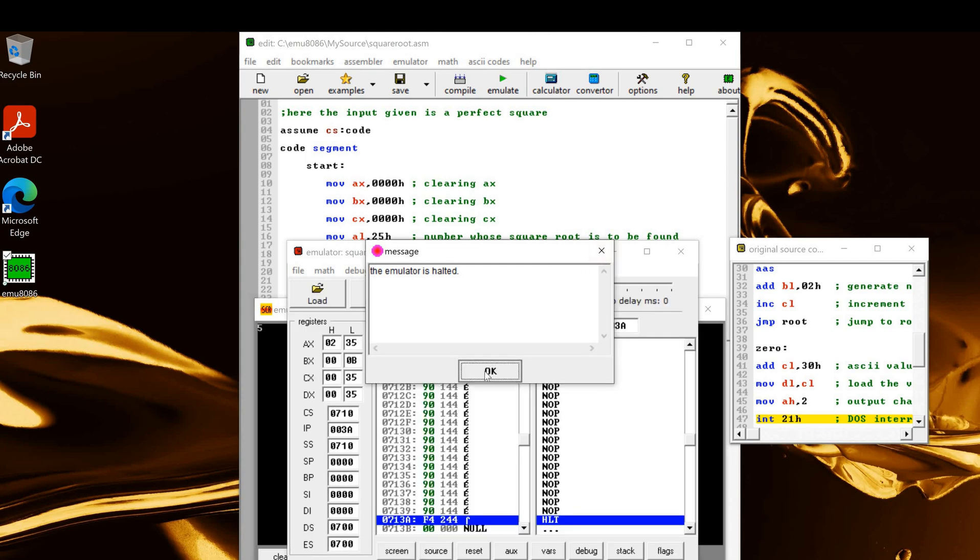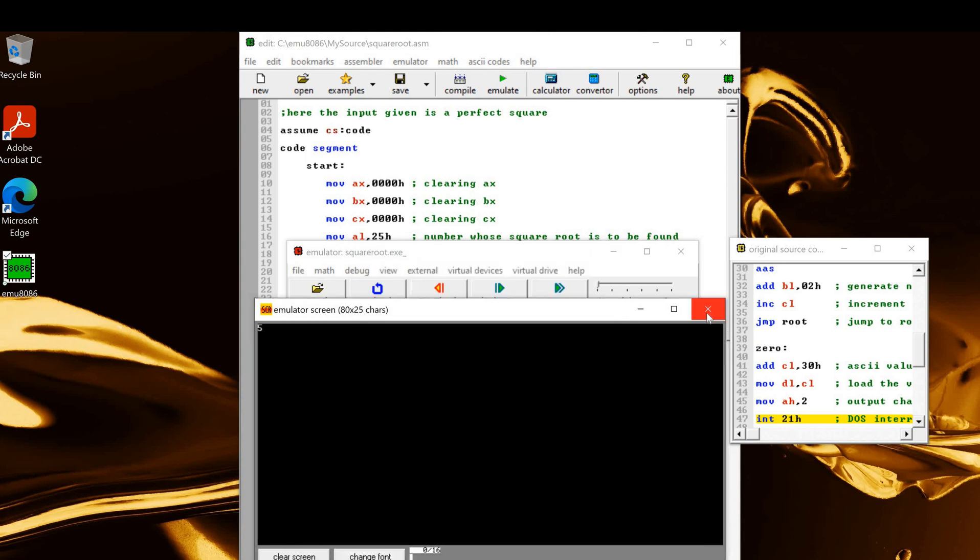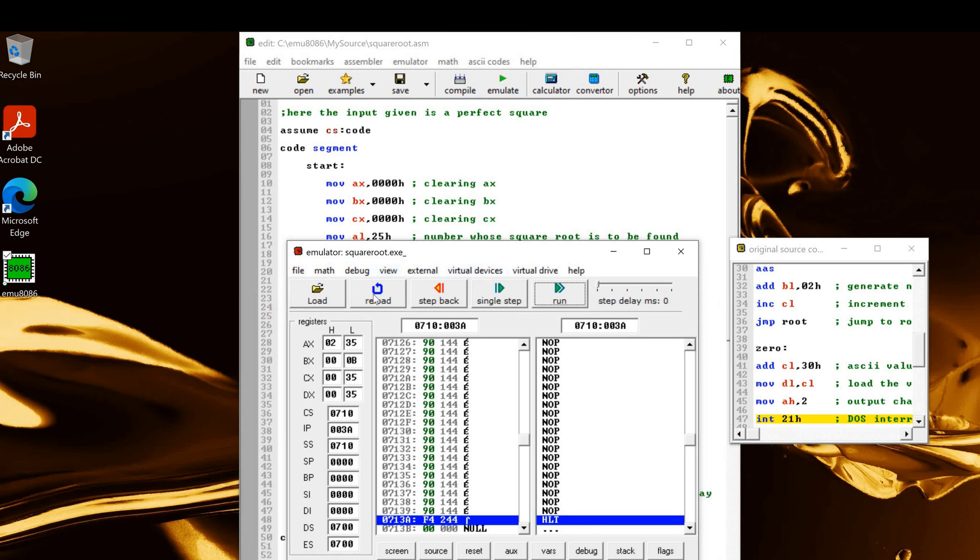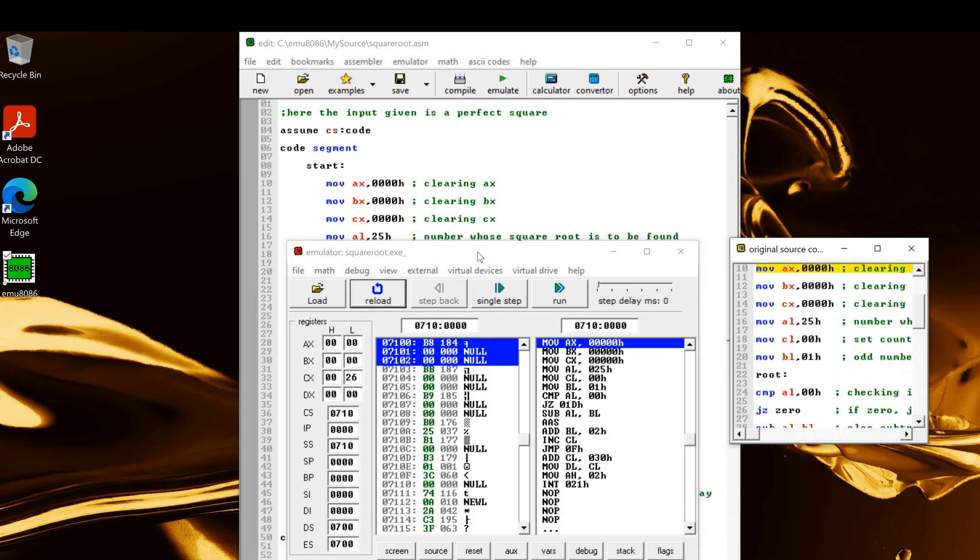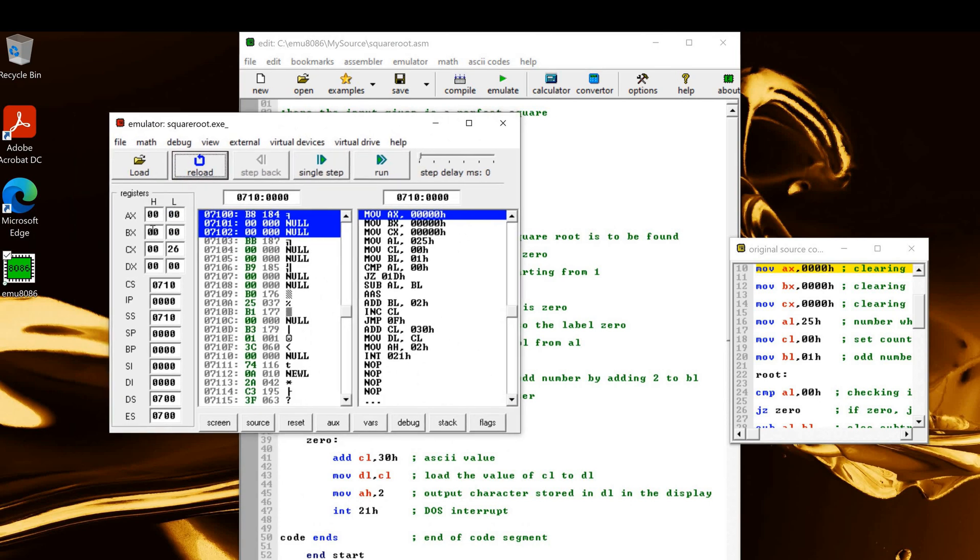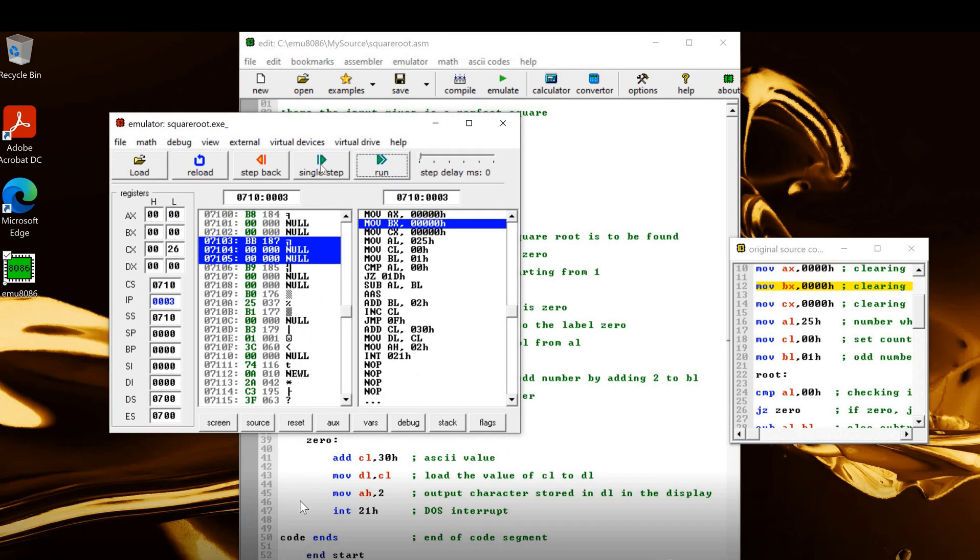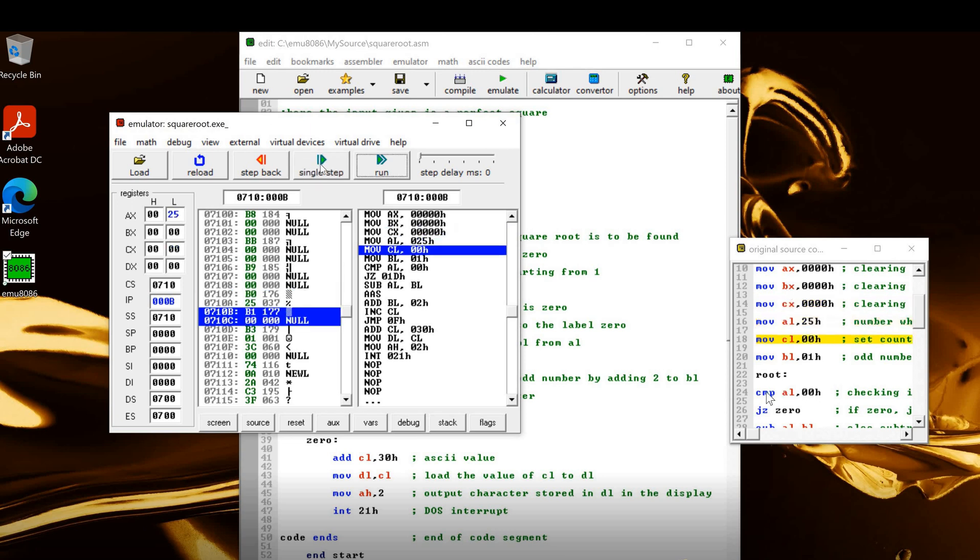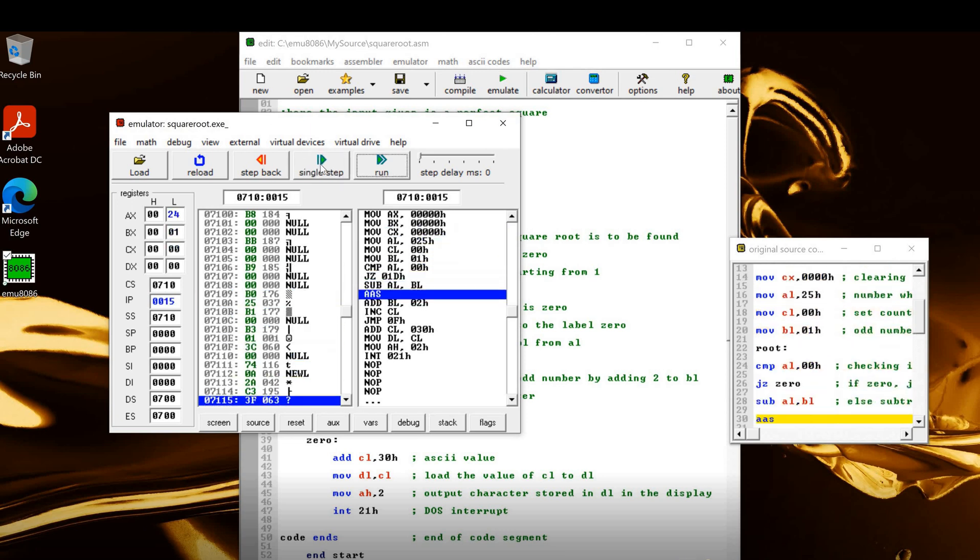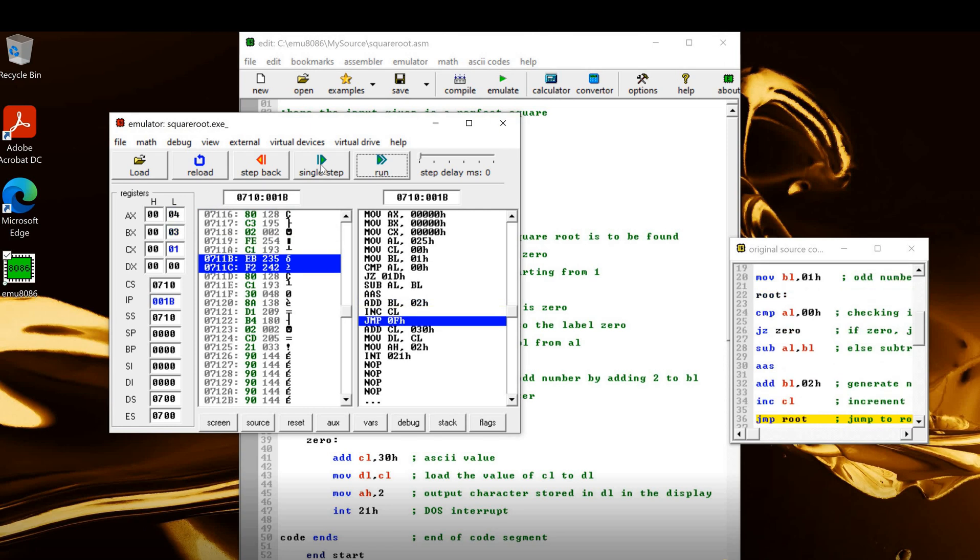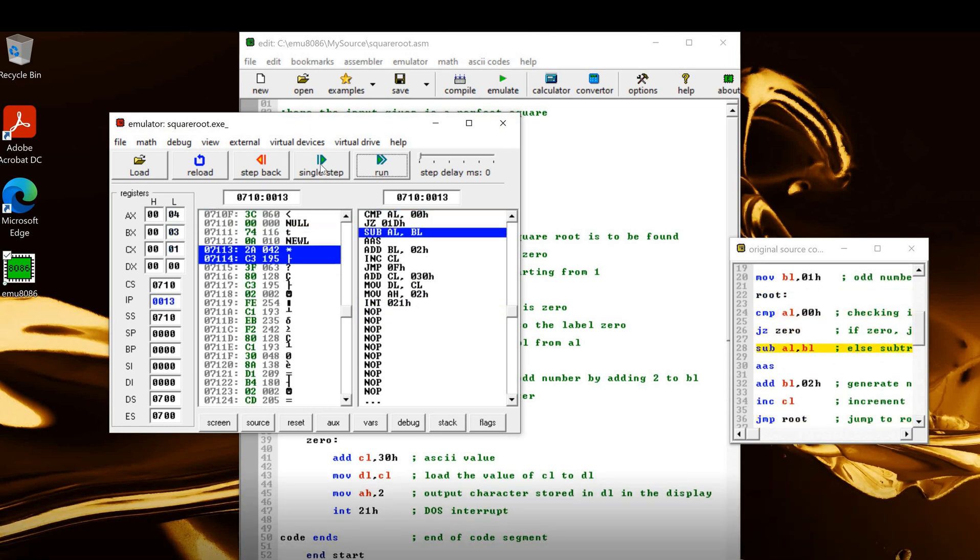Now we have another option, which is the step-by-step running of the program. For that, I'll need to reload the code, then go for the single step execution. You can see the status of the registers here. You can see the yellow highlighter moving according to the instructions which is being executed, just stepwise.